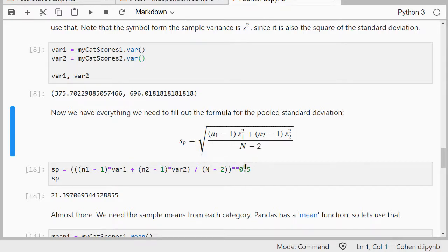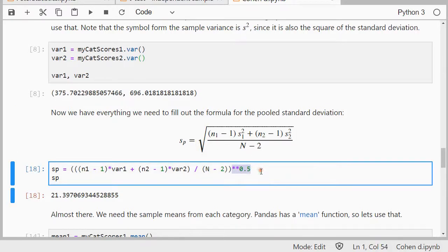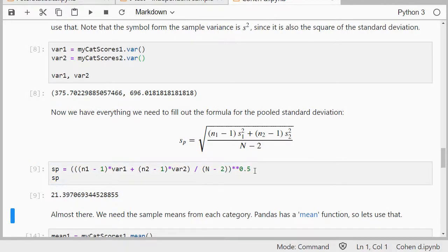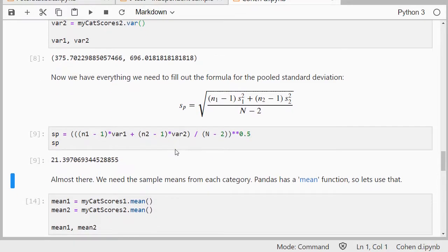The big square root, we can do that by raising the whole thing to the power, power is two times an asterisk, and then a half, and that simply gives us the square root. So in this case, this whole sp thing is 21.397 something.